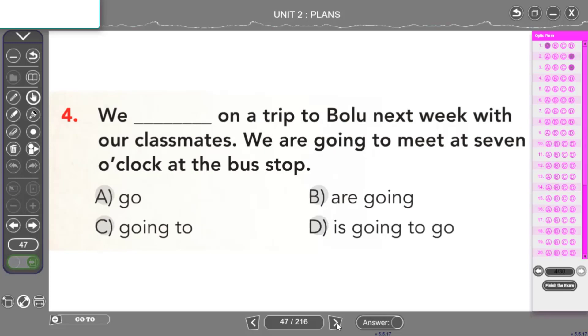We are going on a trip to Bolu next week with our classmates. We are going to meet at 7 o'clock at the bus stop. Haftaya sınıf arkadaşlarımızla beraber Bolu'ya geziye gideceğiz diyeceğim. Yine planlanmış aktiviteden bahsediyorum. Ya be going to kullanmam gerekiyor ya da present continuous tense kullanmam gerekiyor. Bakıyorum D'de are ve be fiilini kullanmam gerekiyor zaten. Burada is var o yüzden bu seçenek olmaz. Present tense zaten kullanamam cümlede. Going to yapısını tek başına kullanamam. Bir be fiil olması lazım önünde. Ama are going bir de şeklindeki yapımızı kullanabilirim. Yine continuous tense kullanarak future gelecek zaman anlamı vermiş olduk. We are going on a trip to Bolu next week with our classmates. We are going to meet at 7 o'clock at the bus stop.